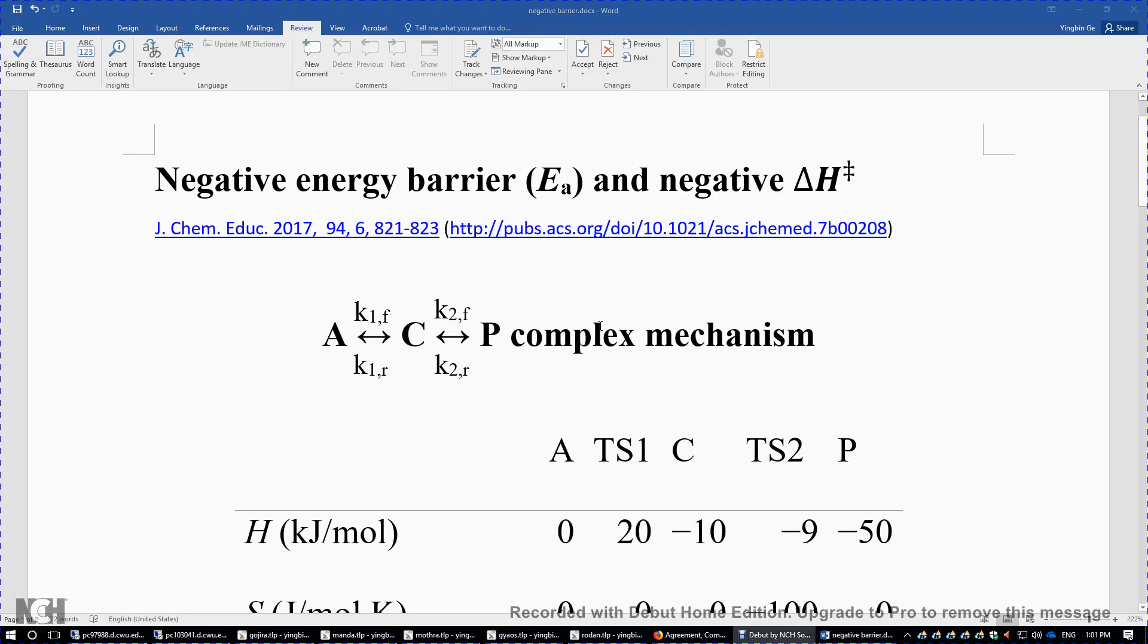We all know that catalysts can lower the chemical reaction energy barrier, but can we make the energy barrier negative? Can we make the enthalpy of activation negative? In this Journal of Chemical Education paper published in 2017, volume 94, issue number 6, pages 821 to 823, I explained this phenomenon using a numerical example implemented in Microsoft Excel.